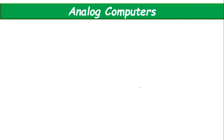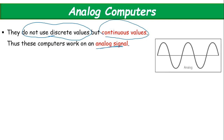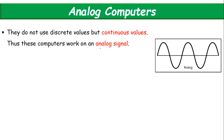Next is analog computer. This is important. Analog computers do not work on discrete values like digital computers. They work on continuous values, or you can say analog signals. Analog signals are continuous in nature, and analog computers work on those signals.